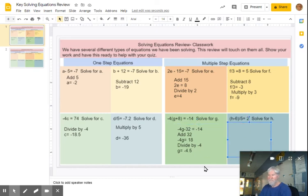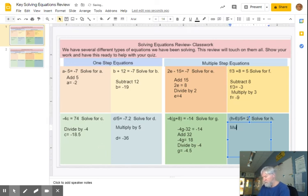All right. Last one here. When you have a division bar and you have an expression for the numerator, you're going to multiply first. So the first thing I'm going to do is multiply by 5. And when I do that, my H minus 6 is going to be equal to 10. So add 6 and I get my H equals 16.